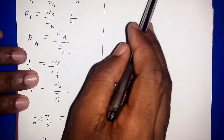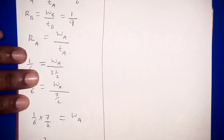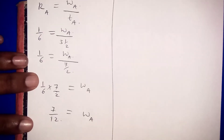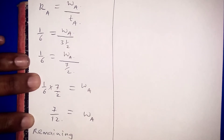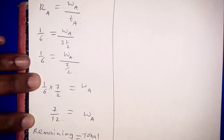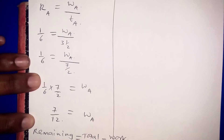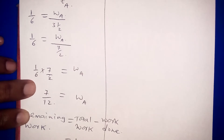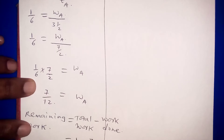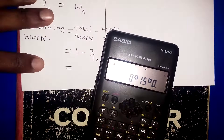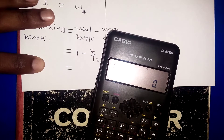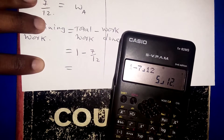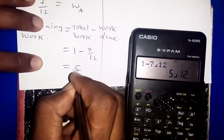The work done by machine A is seven-twelfths. Machine B then did the rest of the work. To find the remaining work, we take the total work minus the work already done: one minus seven-twelfths. The remaining work is five-twelfths.